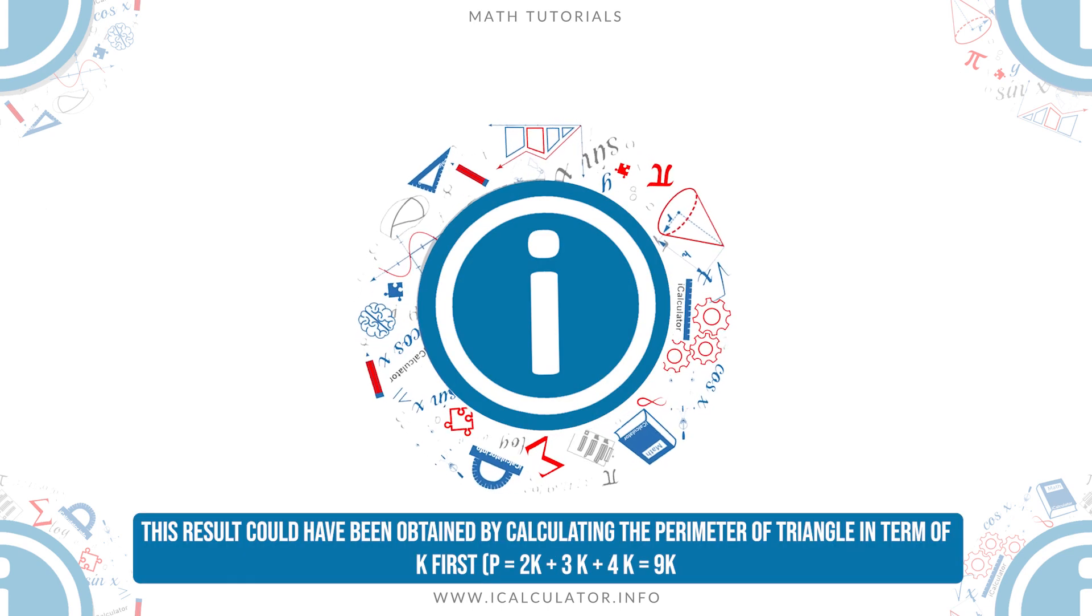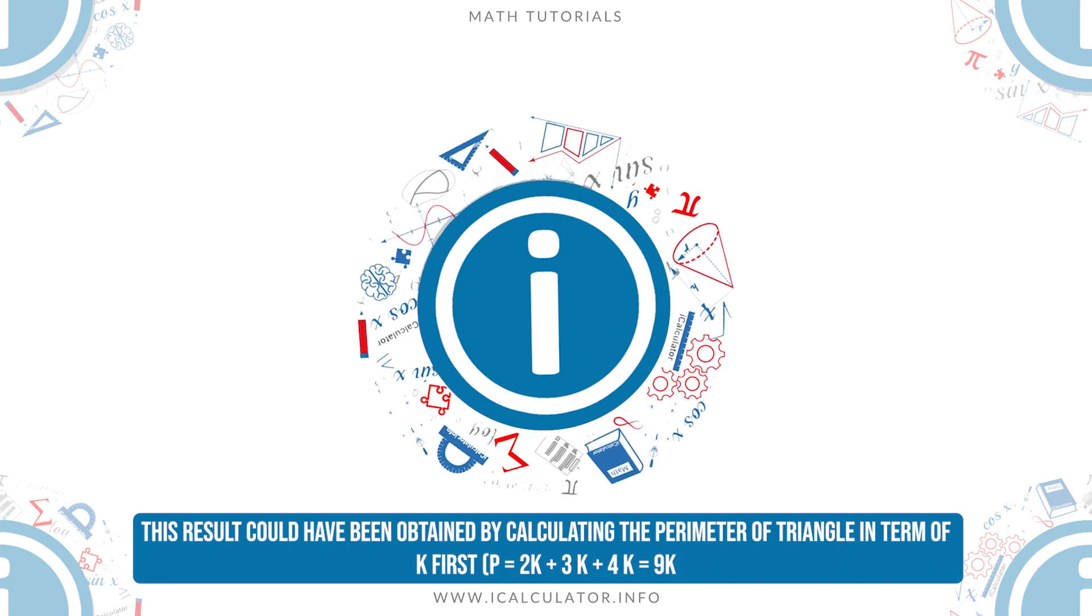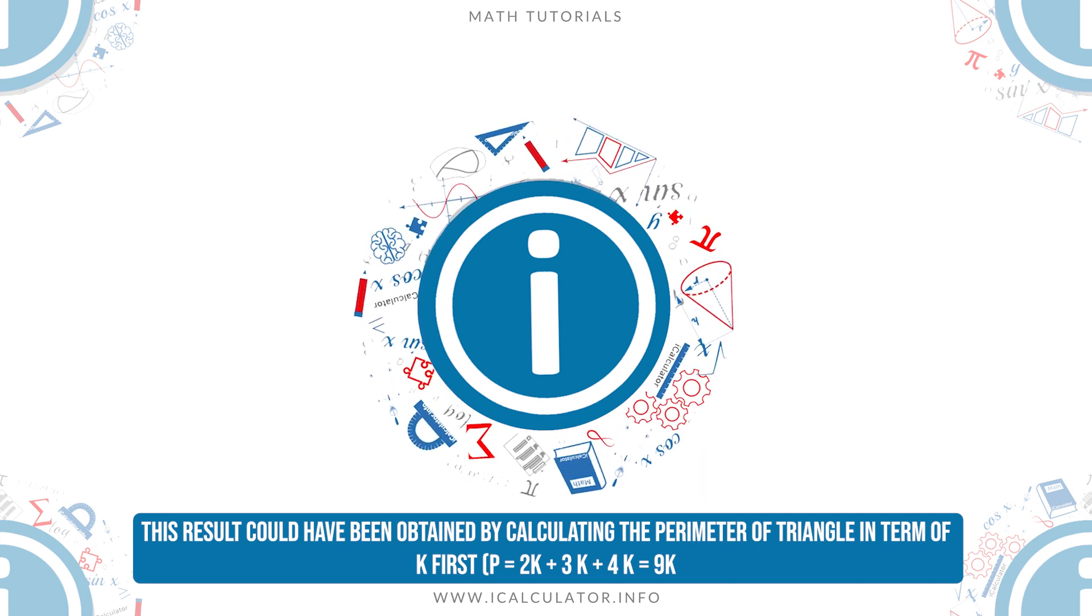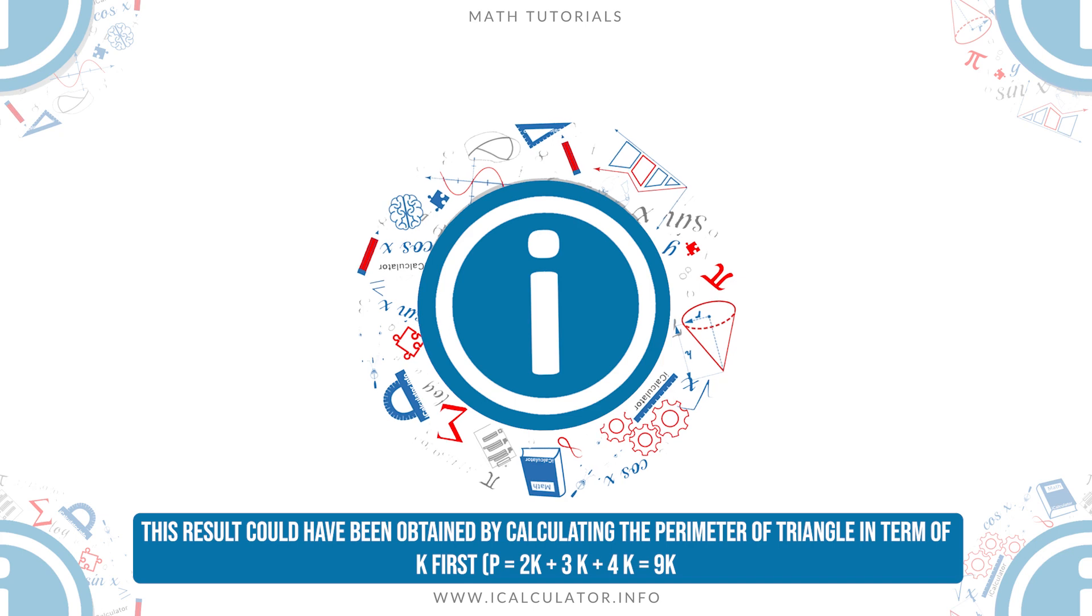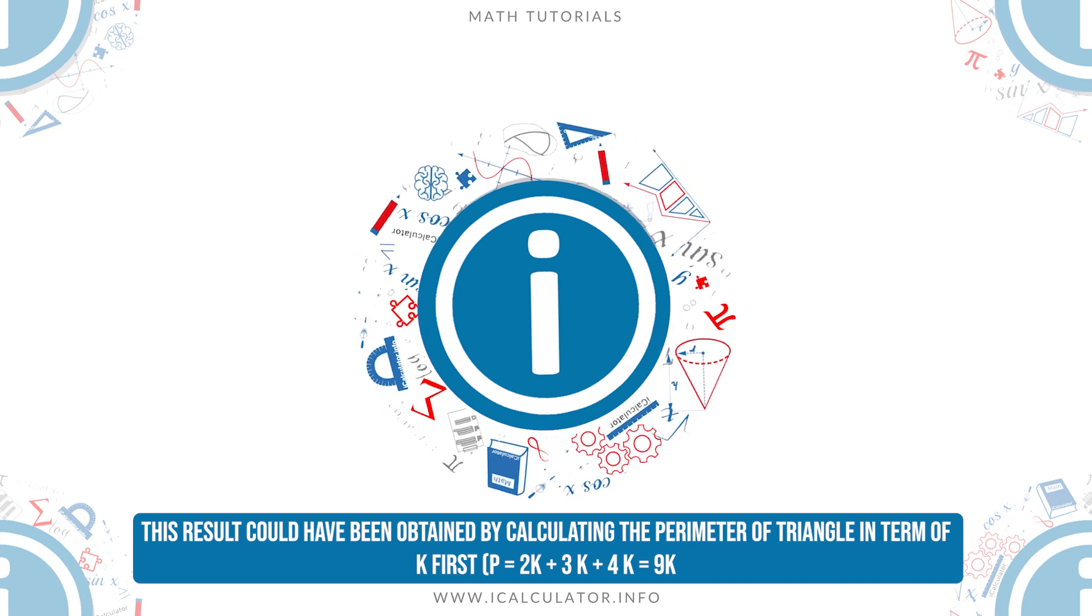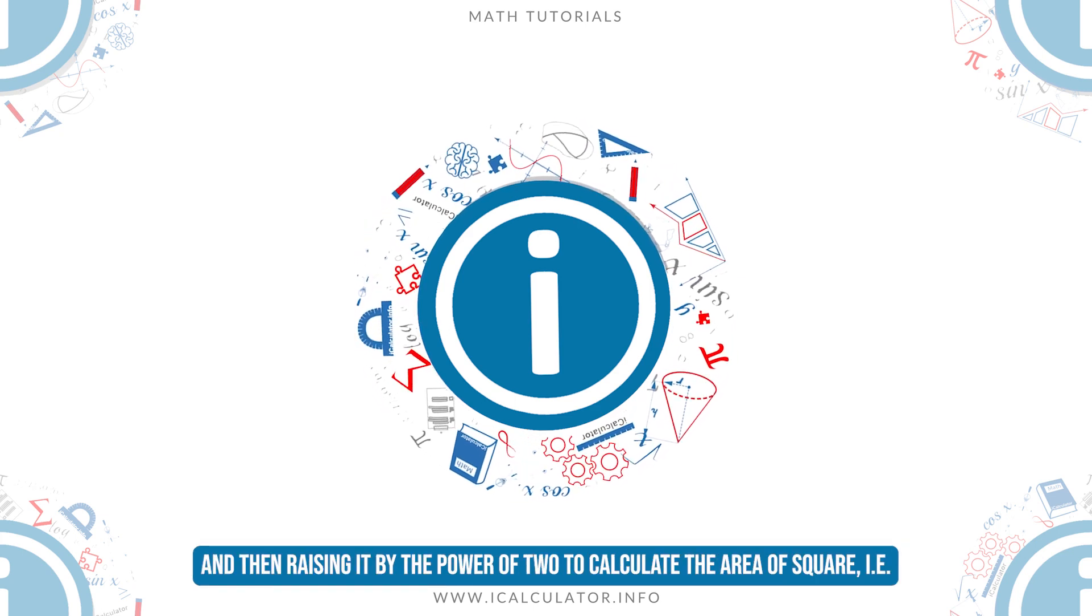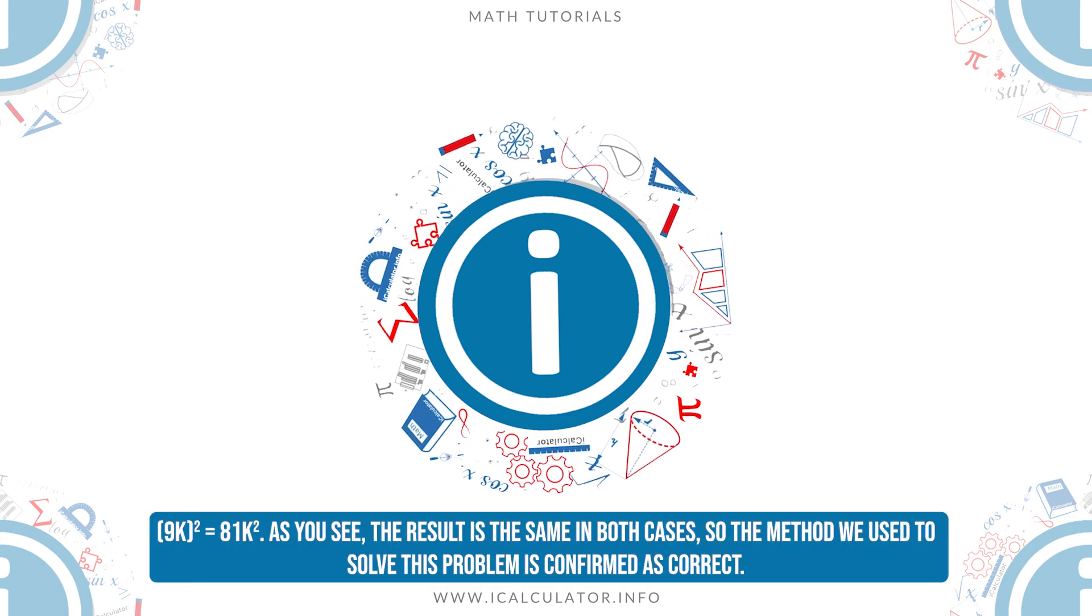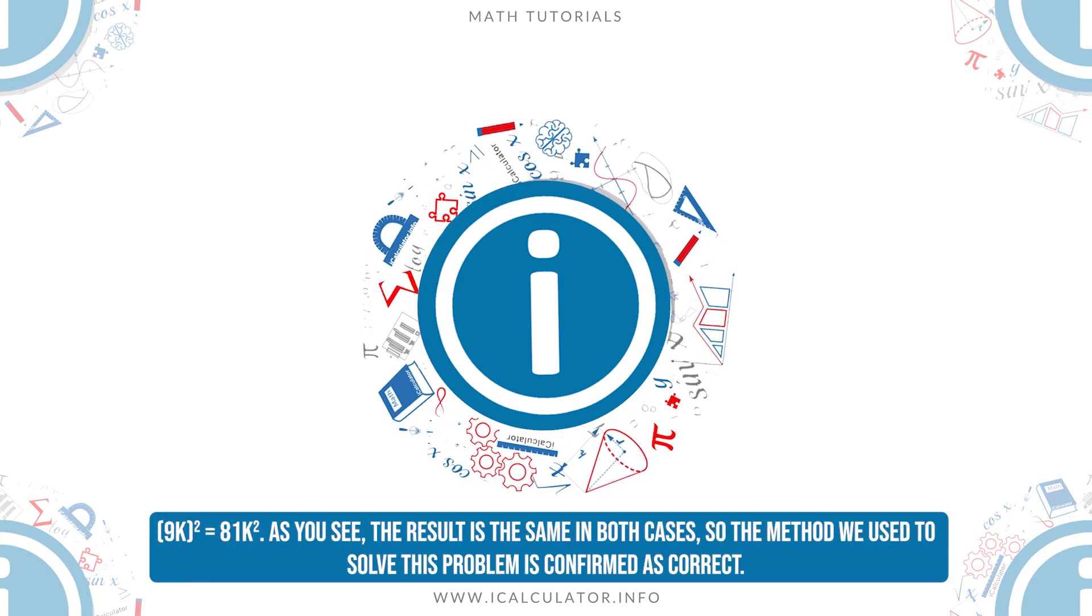This result could have been obtained by calculating the perimeter of triangle in terms of k. First, p equals 2k plus 3k plus 4k equals 9k, and then raising it to the power of 2 to calculate the area of square, i.e., 9k squared equals 81k squared.